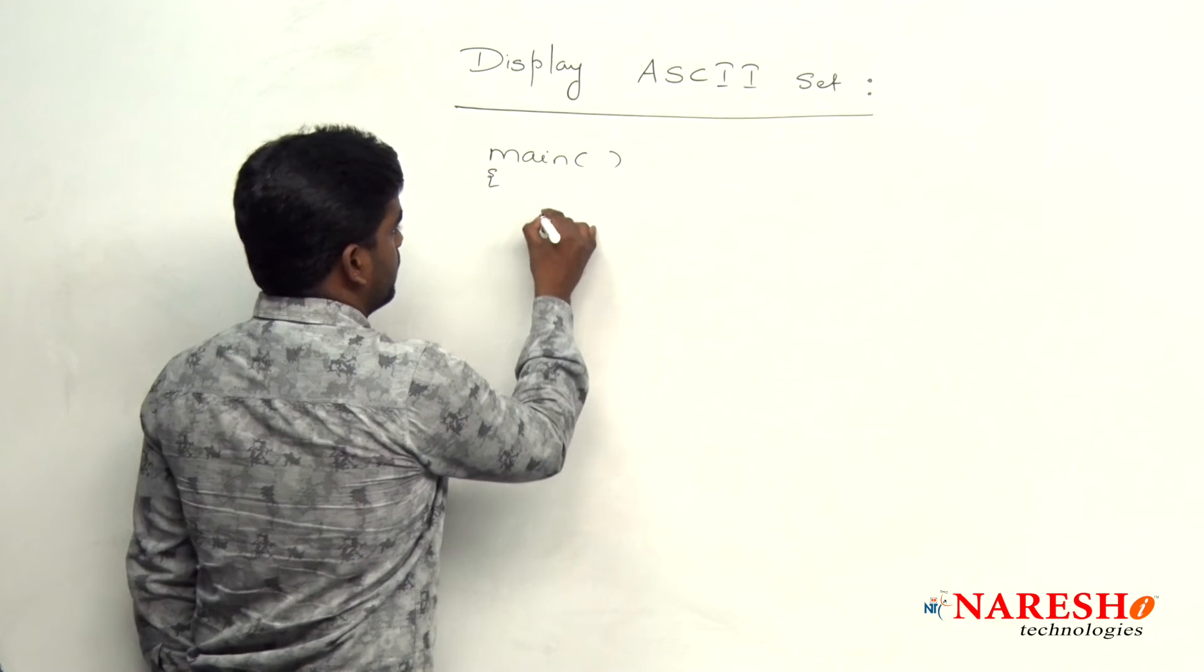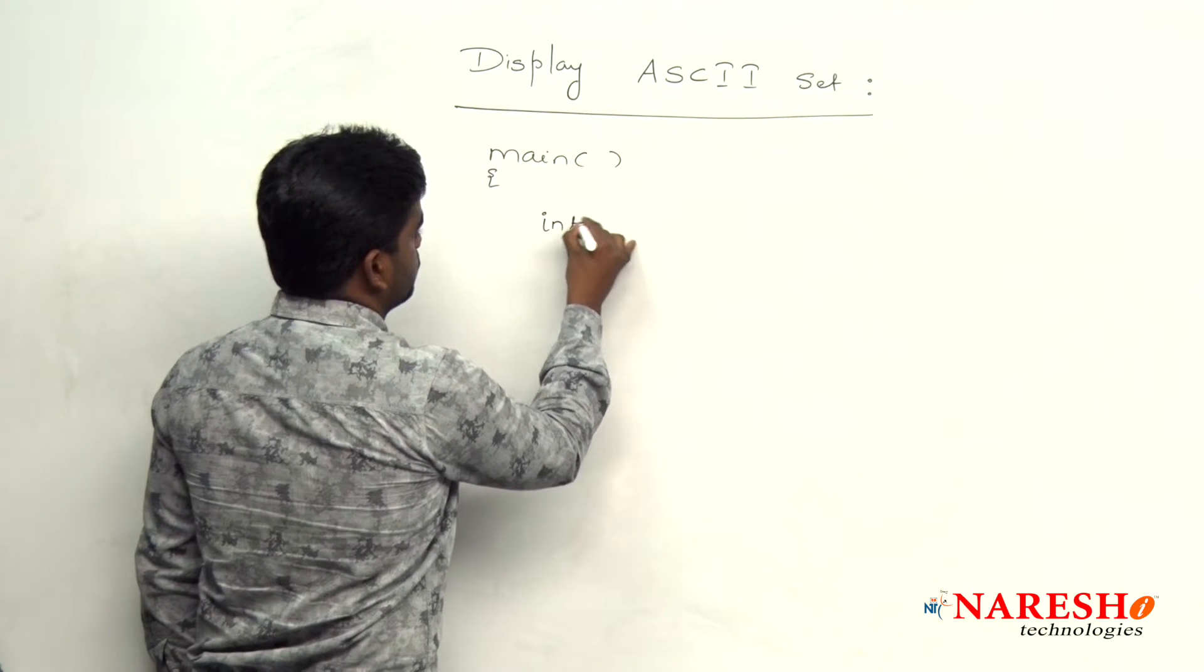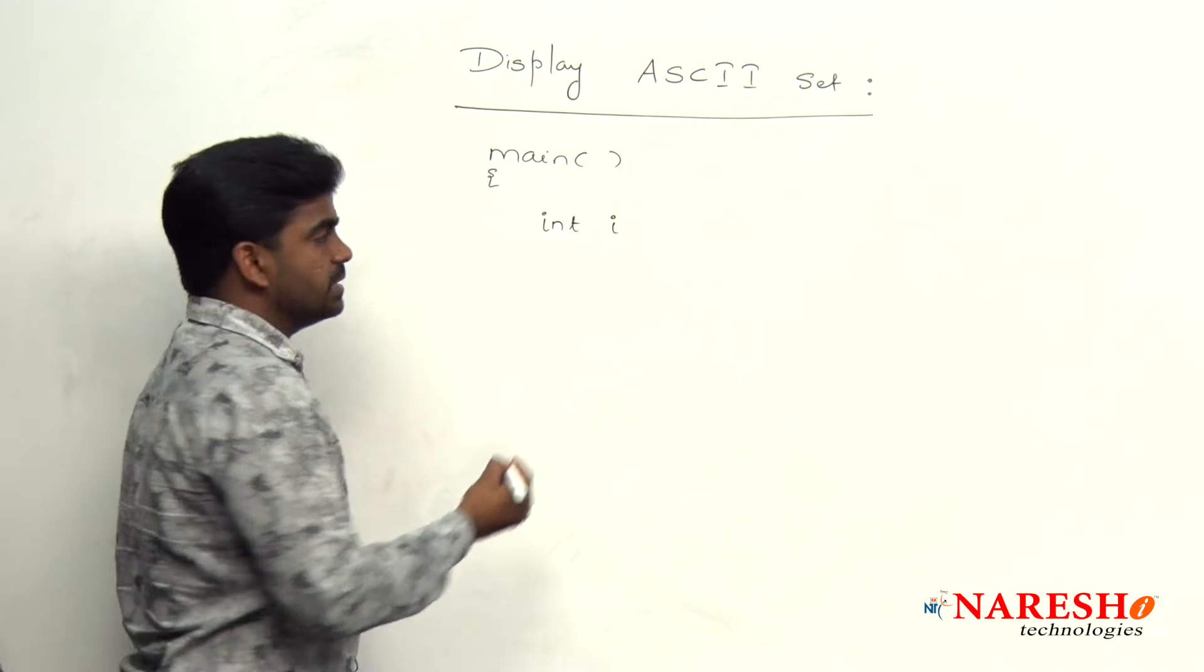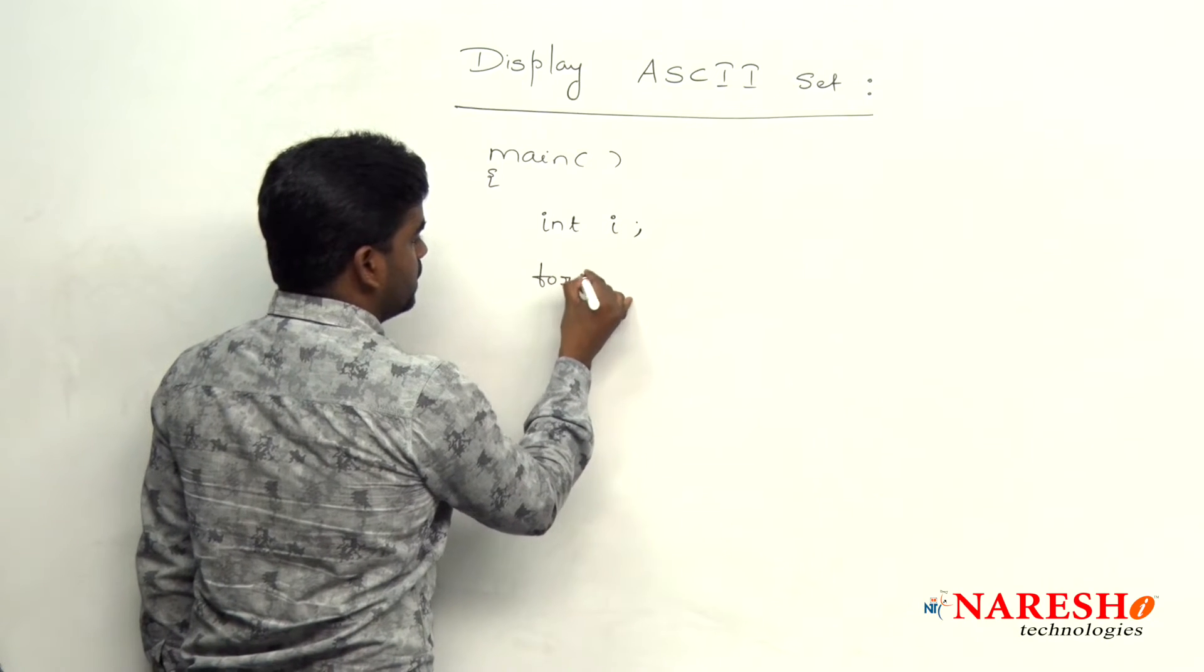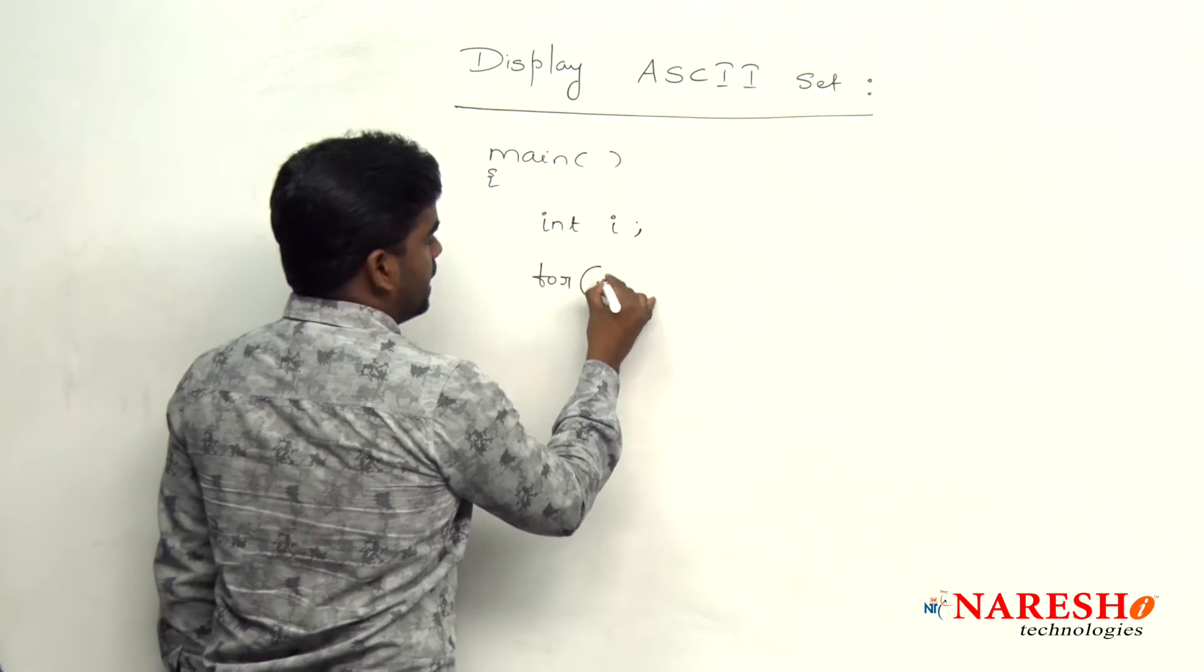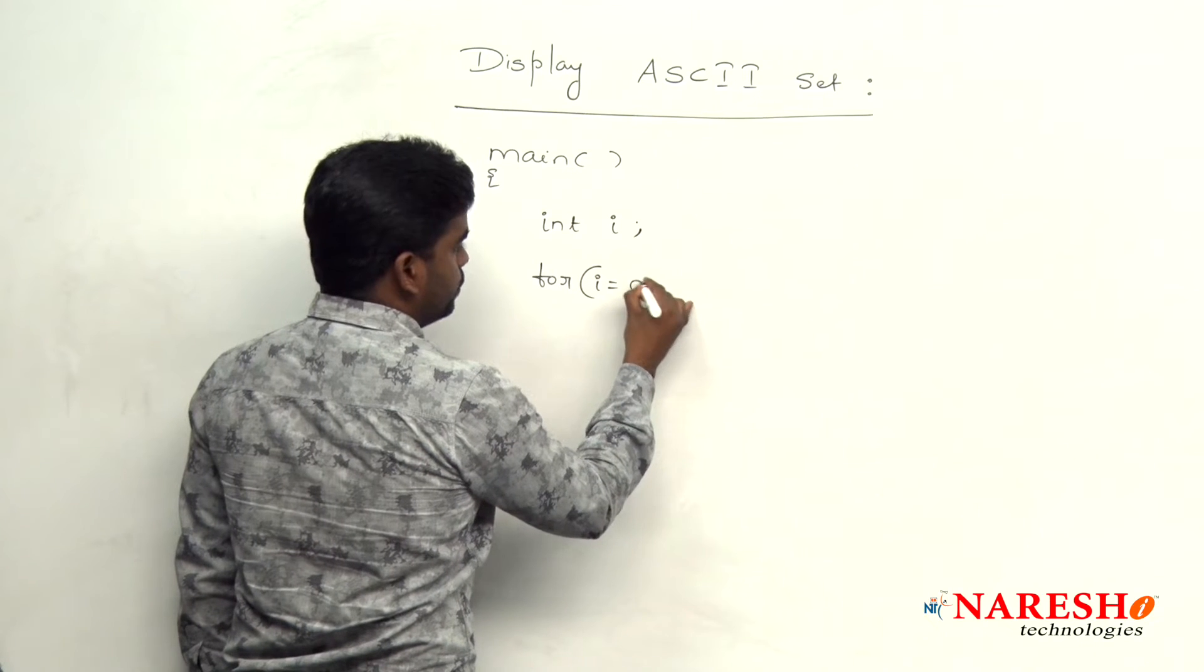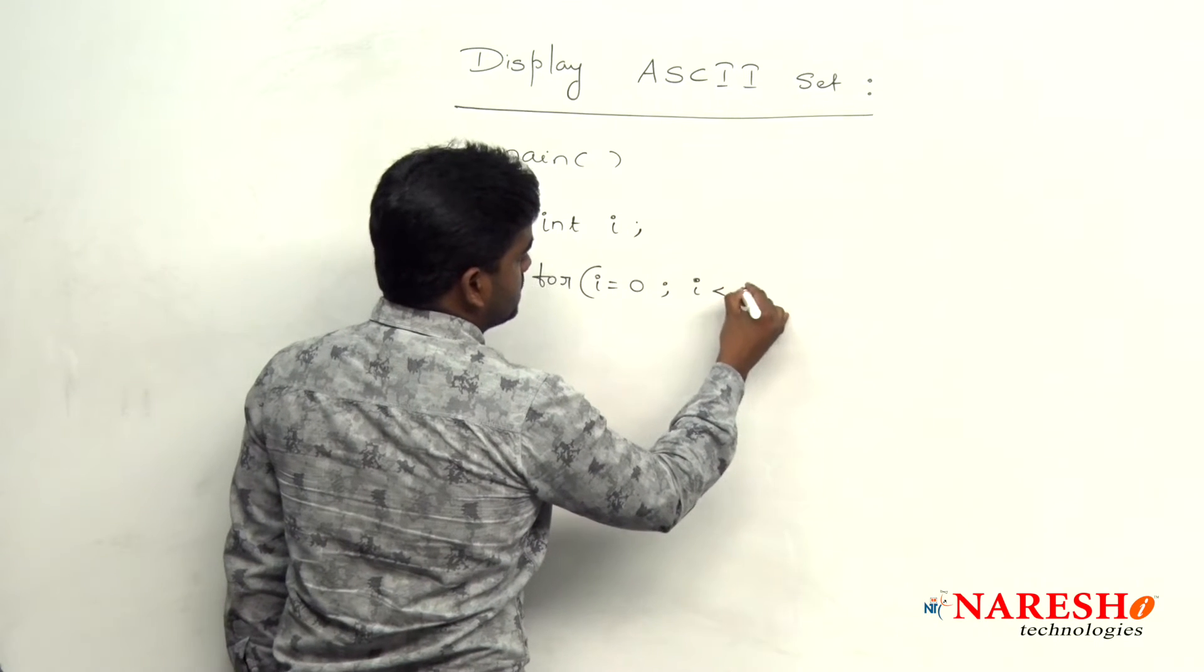Here we are declaring one variable suppose i, variable is i and here it is a for loop we are repeating for, i value starts with 0, i is less than 256.